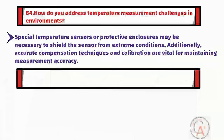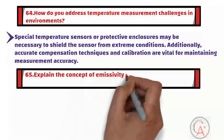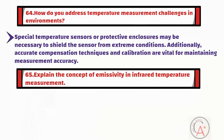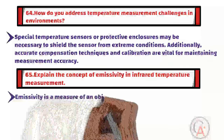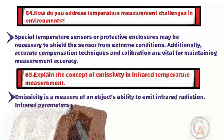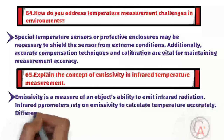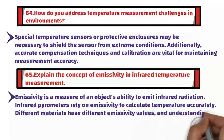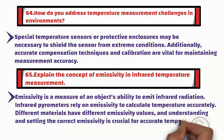Question sixty-five is: explain the concept of emissivity in infrared temperature measurement. Emissivity is a measure of an object's ability to emit infrared radiation. Infrared pyrometers rely on emissivity to calculate temperature accurately. Different materials have different emissivity values, and understanding and setting the correct emissivity is crucial for accurate temperature measurement.